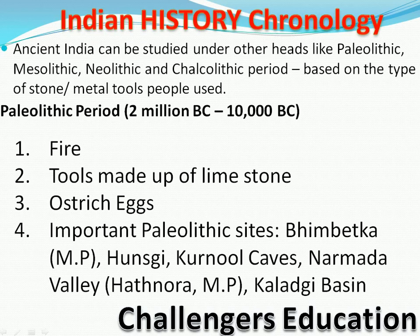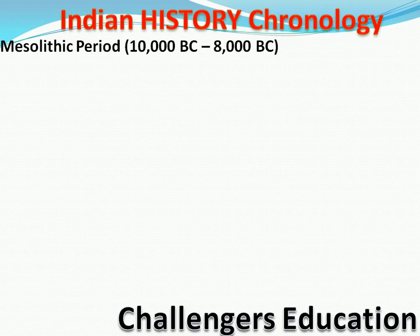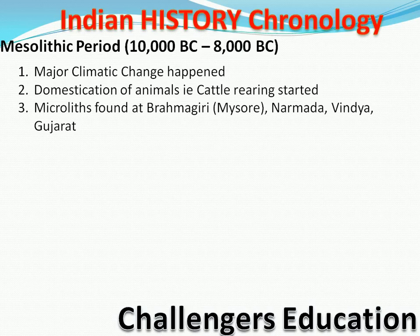Paleolithic ke baad jo time shuru hota hai woh hai Mesolithic period — from 10,000 BC to 8,000 BC. Inme jo bhi names diye hue hain, unka koi proper significance nahi hai, yeh sirf ek rough estimate hai. Jab bhi aap exam mein jaenge, aapse rough estimate hi poochha jayega. Mesolithic mein climate change hua tha, animals ki domestication hui thi, aur Microliths mile the — chote chote patthar ke tools — Brahmagiri, Mysore, Narmada, Vindhya, Gujarat mein.